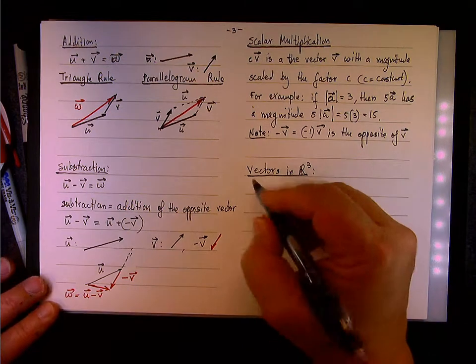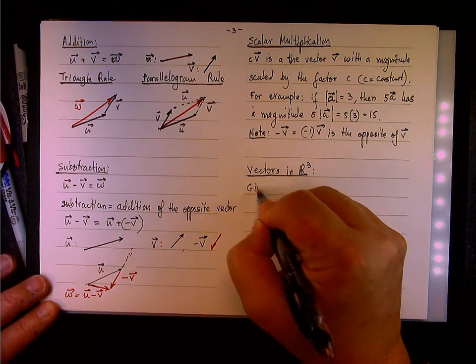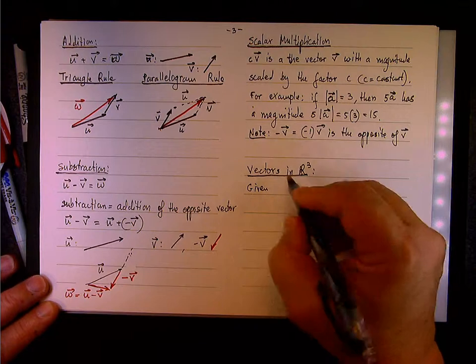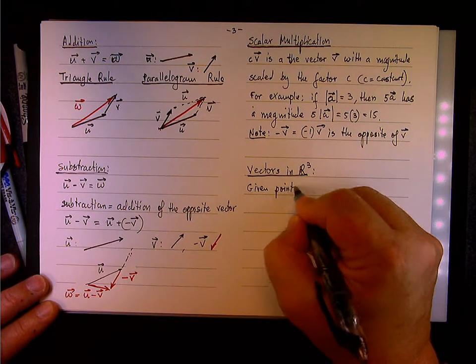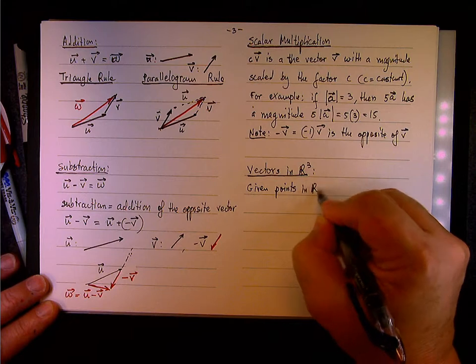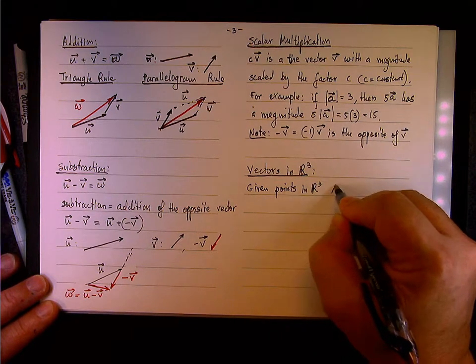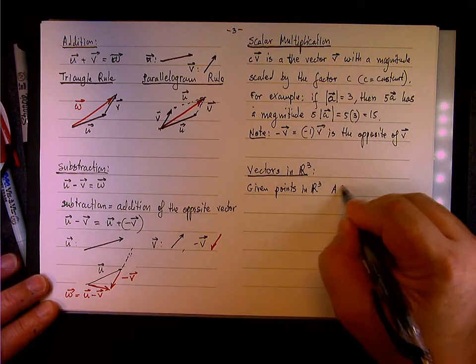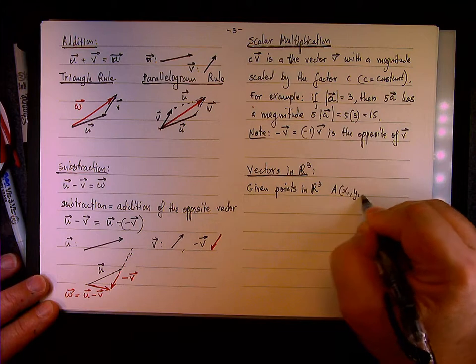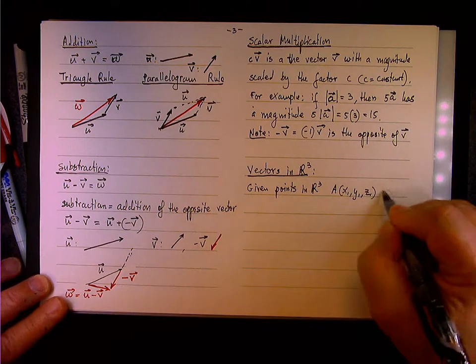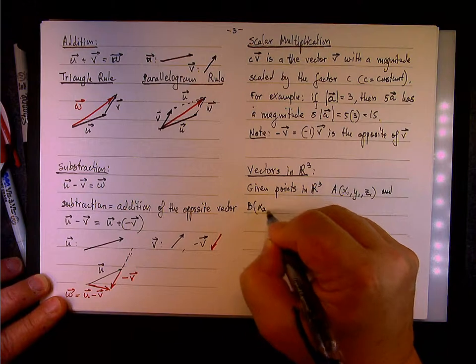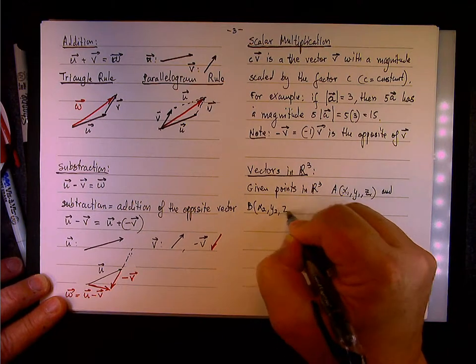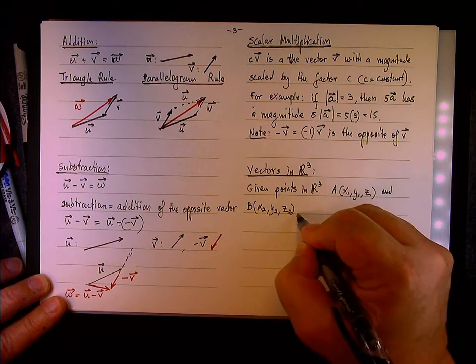So let's say that given two points in space, given points in R³, let's say A that has coordinate (x₁, y₁, z₁) and B that has coordinate (x₂, y₂, z₂).